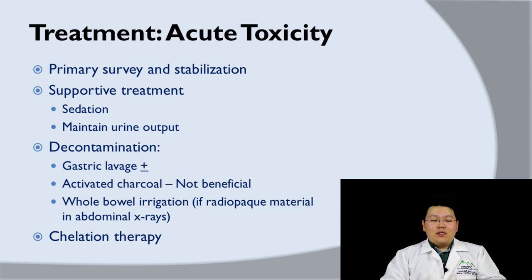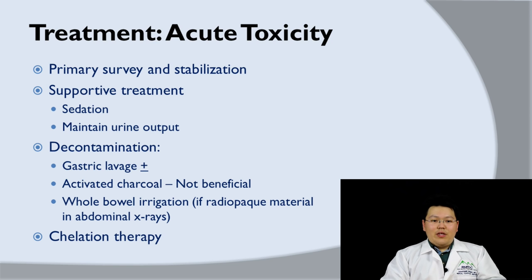For treatment in acute toxicity, first do the primary survey and stabilization. Give supportive treatment; if the patient seizes or is agitated, give sedation and maintain urine output, because urine is the main route by which you excrete lead out of the body. For decontamination, gastric lavage may be considered if the patient just ingested lead within the first hour. Activated charcoal does not bind lead, so there is no benefit to giving it. Whole bowel irrigation has a role if you detect radiopaque material on abdominal X-ray, such as lead paint chips. The specific treatment is chelation therapy.